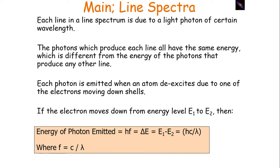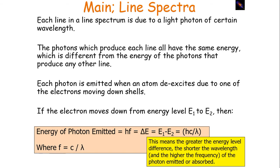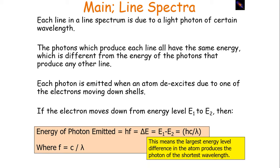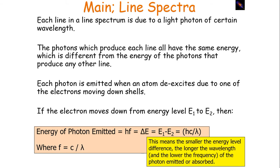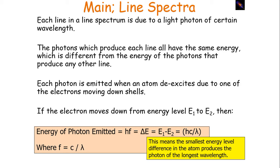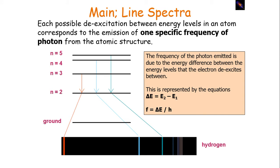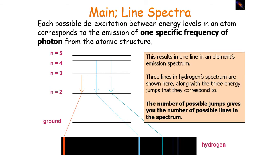Each line in a line spectrum is due to a light photon of a certain wavelength. The photons which produce each line all have the same energy, which is different from the energy of photons in any other line. Each photon is emitted when an atom de-excites due to electrons moving down a shell. If the electron moves from E1 to E2, the energy of the photon emitted is the difference between the energy levels, linked to wavelength by E = hc/λ. The greater the energy level difference, the shorter the wavelength and higher the frequency. The smallest energy level difference produces the photon of the longest wavelength. Each possible de-excitation corresponds to one specific frequency and one line in the emission spectrum.